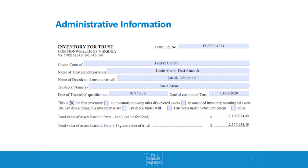Most of the information at the top of the form is going to be on your statement of qualification. When you go to court and qualify as trustee, all of that information is going to be located on that form, so you can fill it all out and go from there.